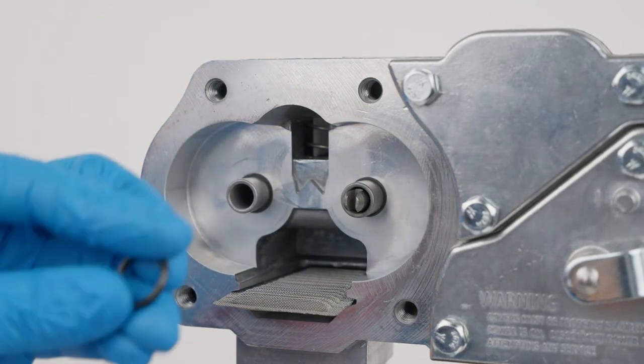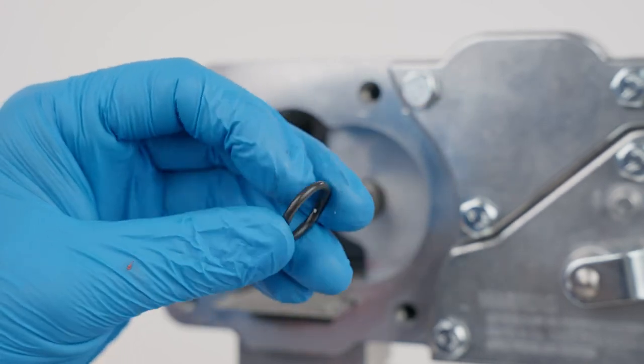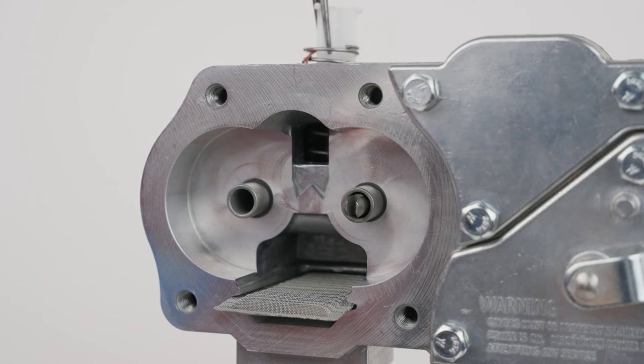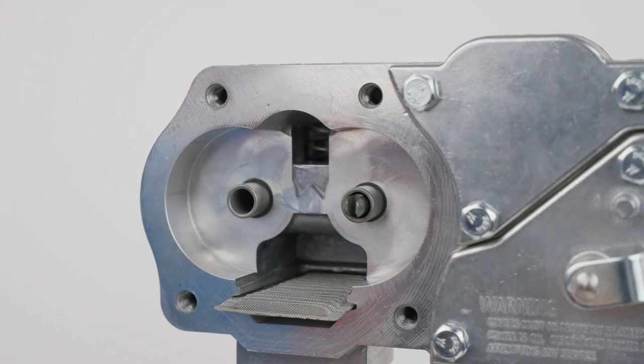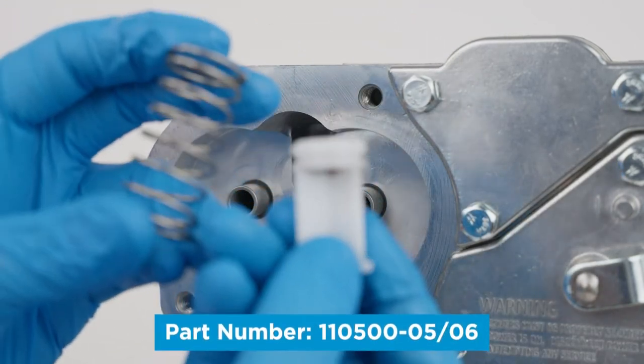Inspect the o-ring and ensure it is not damaged, swollen, or loose fitting. Using a pair of needle nose pliers, extract the poppet and spring from the bypass cavity and inspect for wear, debris, or damage.